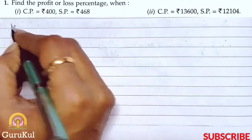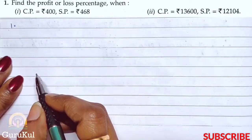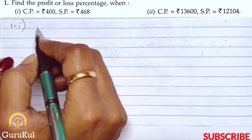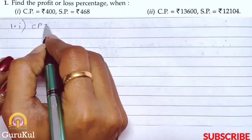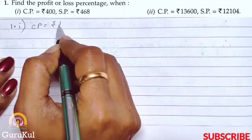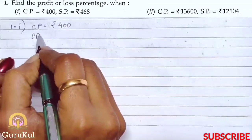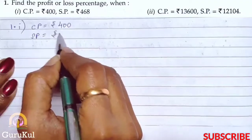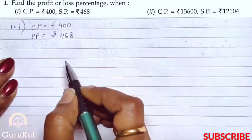Now question number 1. We need to find the profit or loss percentage. In the first part it is said that CP is equal to Rs. 400 and SP is equal to Rs. 468.